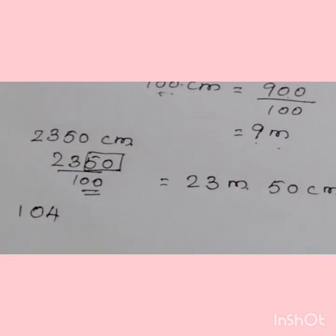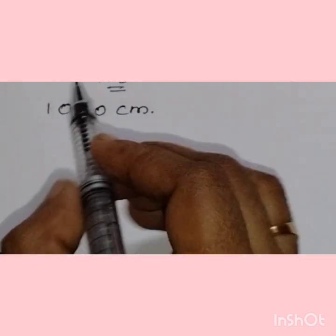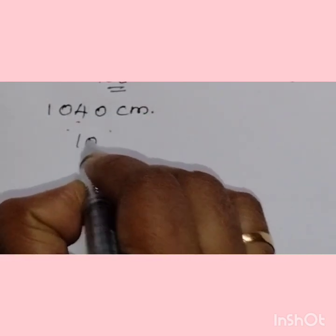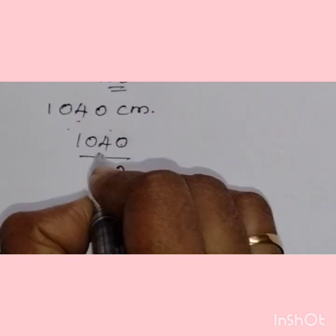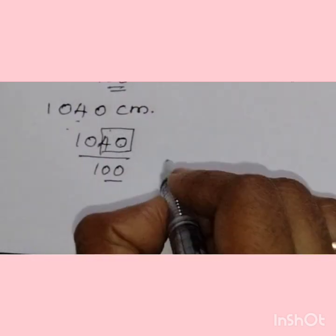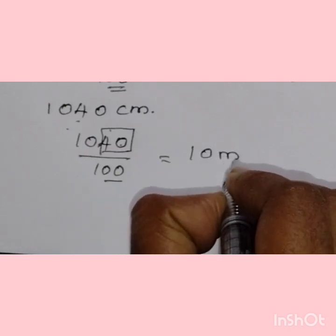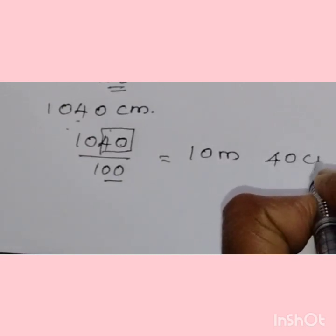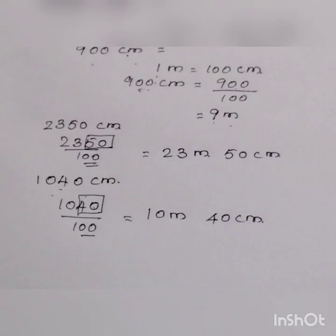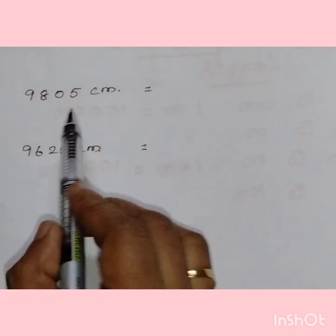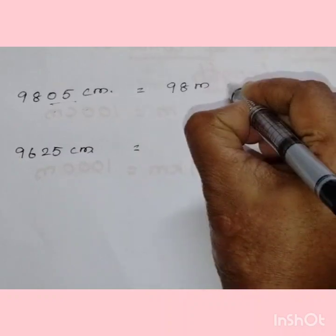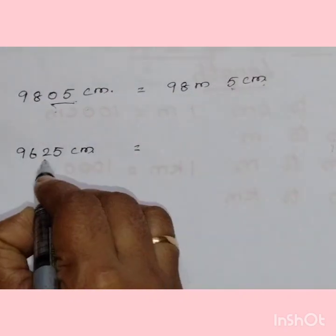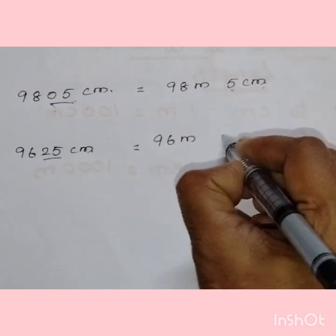The next question is 1040 centimeters. Taking the last two digits as the remainder, it becomes 10 meters and 40 centimeters. Using the same trick: 9805 centimeters becomes 98 meters and 5 centimeters. And 9625 centimeters becomes 96 meters and 25 centimeters.